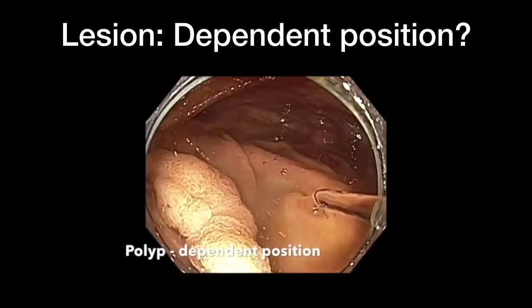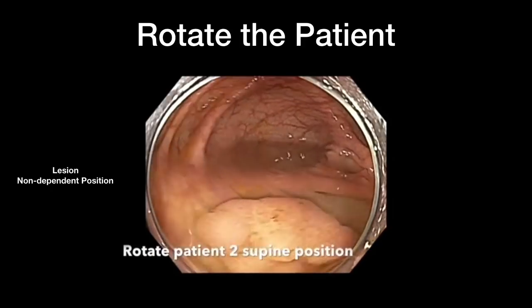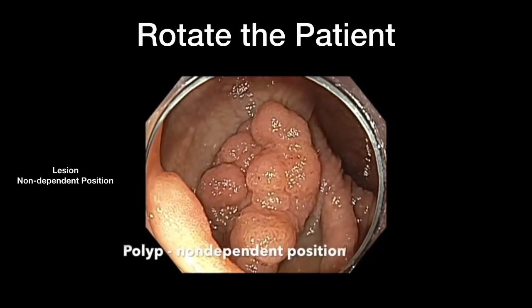The reason it is important to find out whether a lesion is dependent is because if bleeding were to happen after resection, you will not be able to find that bleeding vessel as it all gets submerged in a pool of blood. The simple trick is to rotate the patient. If the patient is in the left lateral position, make the patient go to either supine or, in some cases, right lateral position. We rotated the patient to supine position and it made all the difference — the fluid moved away and the lesion became non-dependent, so if bleeding were to happen, you can easily find the bleeding source.